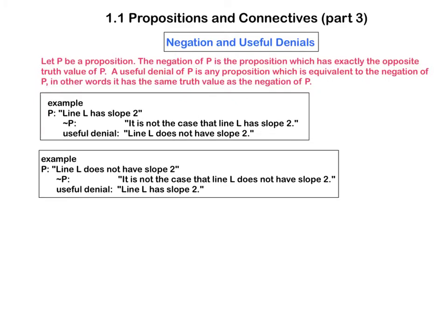A better example would be if P says line L does not have slope 2. Then the negation would be it is not the case that line L does not have slope 2. This is not as useful as if we put the useful denial of line L has slope 2.